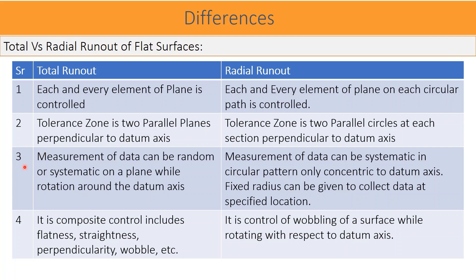Third, total run out measurement data can be random or systematic on a plane while rotating around the datum axis, whereas in radial run out, measurement data can be systematic in a circular pattern only, concentric to the datum axis — a fixed radius can be given to collect data at a specified location. Fourth, total run out is a composite control including flatness, straightness, perpendicularity, circularity, ovaling, etc., whereas radial run out is the control of ovaling of a surface while rotating with respect to the datum axis.